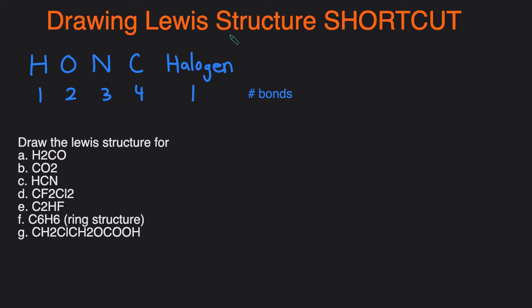So the shortcut only works if your compound is neutral. If you look at these examples we're going to work through, notice that they don't have any charges. If you see something with a charge like positive 2 or negative 1, you can't use the shortcut and you have to use the longer technique, which you can find in my other video about how to draw Lewis structures — I'll link that in the description below.